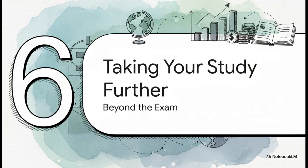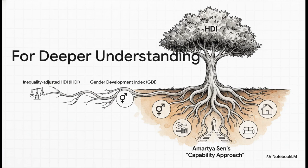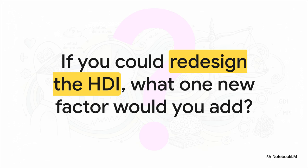A truly great student doesn't just stop when they have the answer for the test — they get curious. Once you've got this exam question locked down, see where this knowledge can take you next. The UNDP didn't just stop with the HDI; they came up with other tools to fix its weaknesses, like the IHDI we mentioned, the Gender Development Index, and more. But if you really want to understand the heart and soul of the HDI, look up Amartya Sen's capability approach — the beautiful idea that development is really about giving people the freedom and ability to live the life they want to live, so much bigger than just money. So here's a final thought: if they handed you the keys to redesign the HDI, what's the one thing you would add? Would it be something about the environment, political freedom, happiness, or mental well-being? Thinking about that is what takes your understanding from good enough for an exam to truly great.